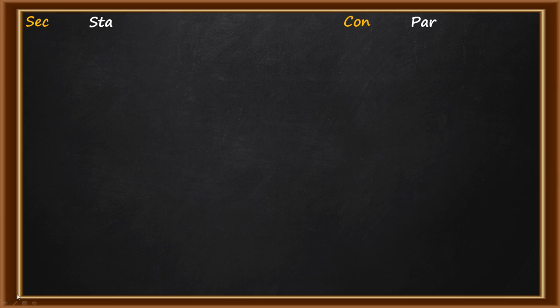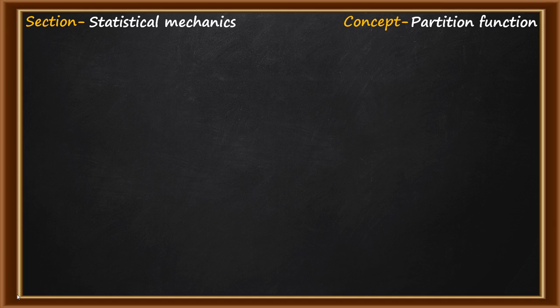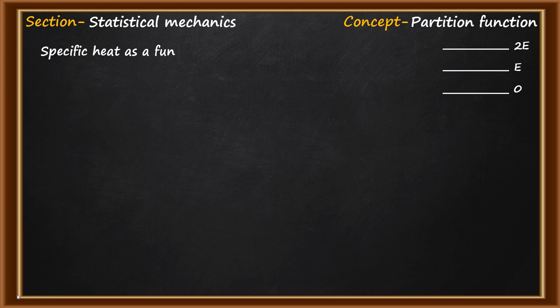Let's get started. This question comes from the section on statistical mechanics and the concept involved here is the partition function. We have a three-state system whose energies are 0, E, and 2E, and we need to find the graphical representation of the temperature dependence of the specific heat. For that we need to evaluate the expression of specific heat as a function of temperature. We are given energy levels and asked about a thermodynamic quantity — so how do we relate them?